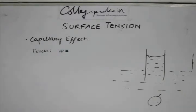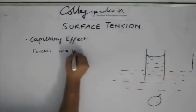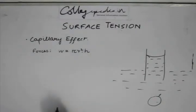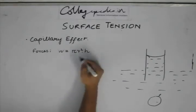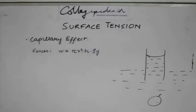Weight is going to be the volume of this section which is π r² times the height of the fluid h. This is the volume, this into the density will give us the mass times g will give us the weight.